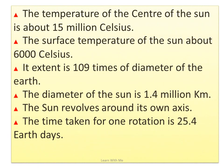The temperature of the center of the Sun is about 15 million degrees Celsius. The surface temperature of the Sun is about 6,000 degrees Celsius. It extends 109 times the diameter of the Earth. The diameter of the Sun is 1.4 million kilometers. The Sun revolves around its own axis and the time taken for one rotation is 25.4 days.